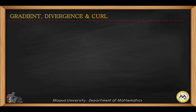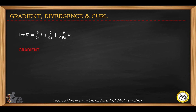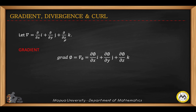Let's continue with gradient, divergence, and curl — these are special vector operations. This is a differential operator which is actually a vector. You have the first partial derivative with respect to x, the operator for the first partial derivative with respect to y, and for the partial derivative with respect to z. The gradient is defined as follows using this symbol.